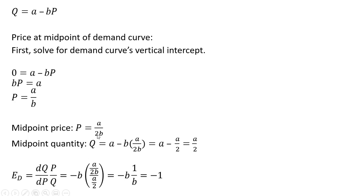And then for P, I'm going to plug in the midpoint price, A divided by 2B. And then for Q, I'm going to plug in the midpoint quantity, A divided by 2.